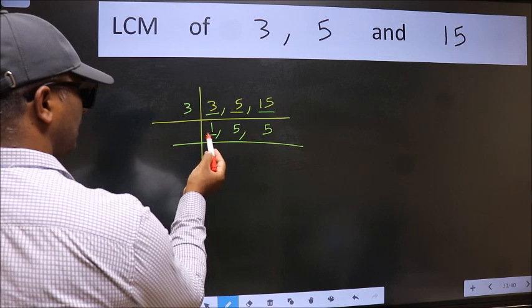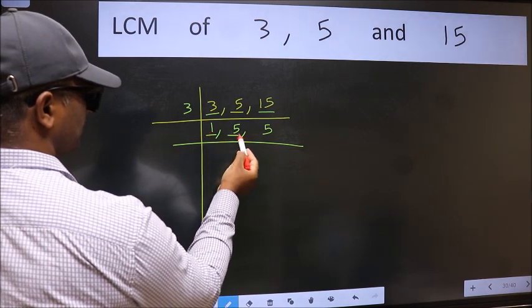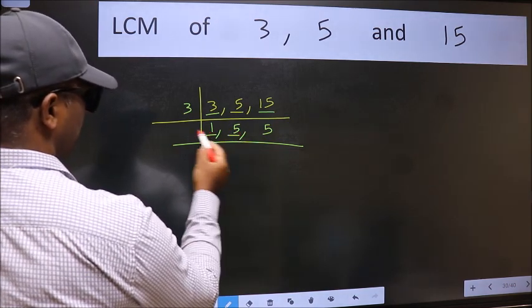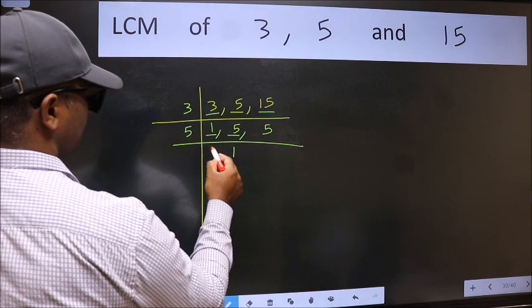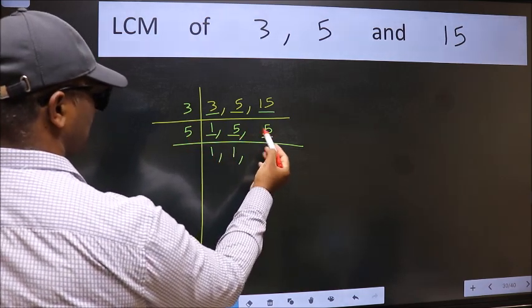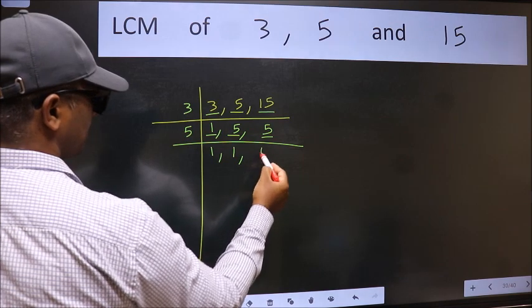Now we got 1 here, so focus on the next number, 5. 5 is a prime number, so 5 goes into 5 once. The other number 5 - when do we get 5 in the 5 table? 5 times 1 is 5.